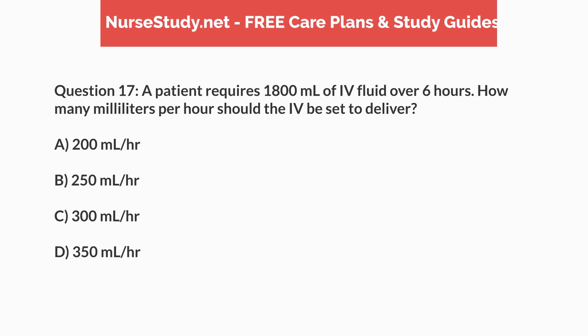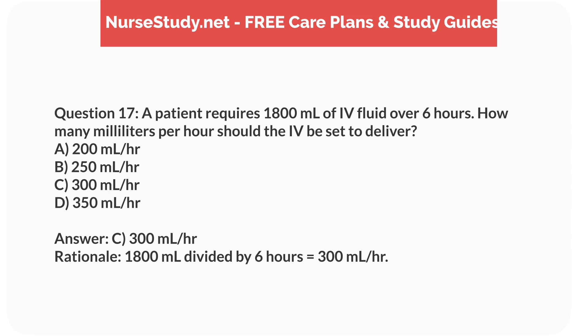Question 17. A patient requires 1,800mL of IV fluid over 6 hours. How many mL per hour should the IV be set to deliver? a. 200mL per hour, b. 250mL per hour, c. 300mL per hour, d. 350mL per hour. Answer: c. 300mL per hour. Rationale: 1,800mL divided by 6 hours equals 300mL per hour.